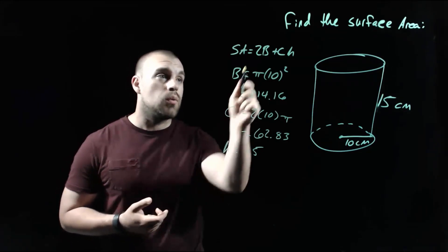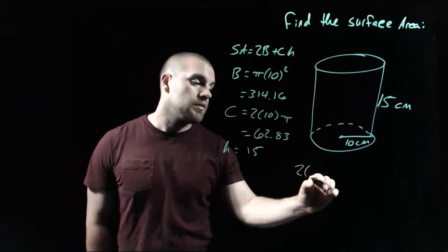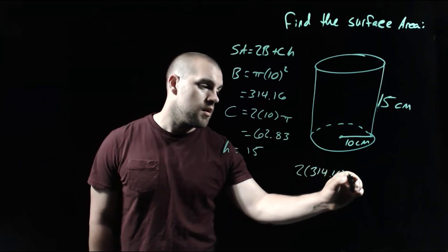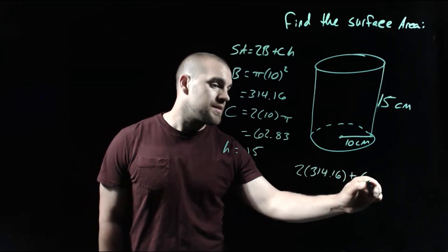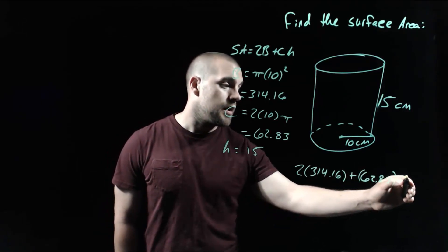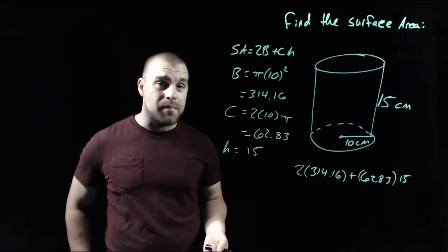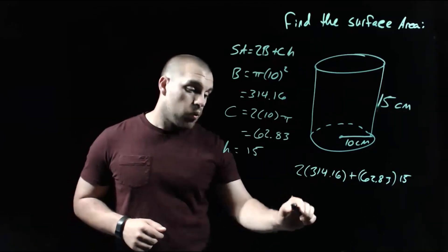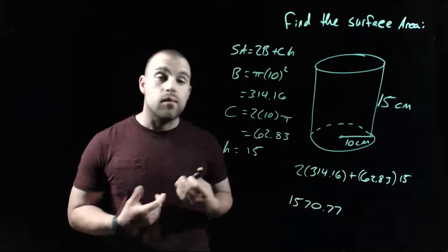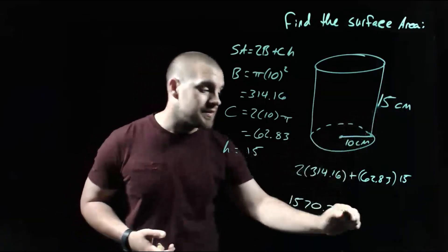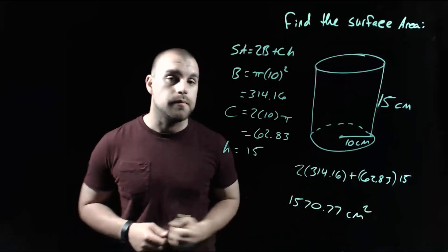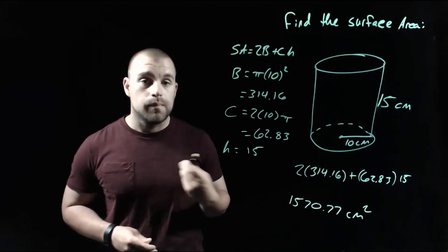Filling this information into our formula, we've got 2 times 314.16, plus 62.83 times the height of 15. Typing all of this into the calculator, we get 1570.77. We were measuring in centimeters, and since it's area, the centimeters gets squared on it. That's going to be it for this video. Thanks for watching.